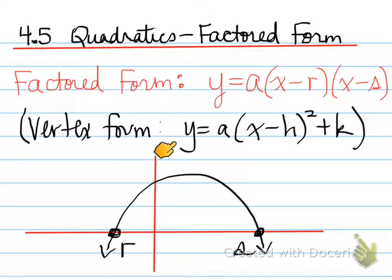The vertex form that we just studied involves y equals a times x minus h squared plus k. Note that in factored form and vertex form, they both have a variable a. So the a is no different whether you have it in factored form or in vertex form.